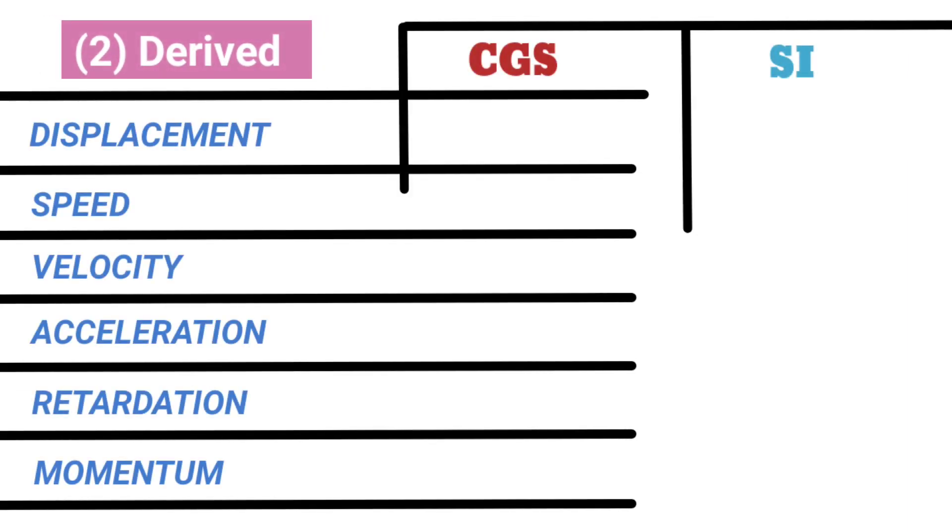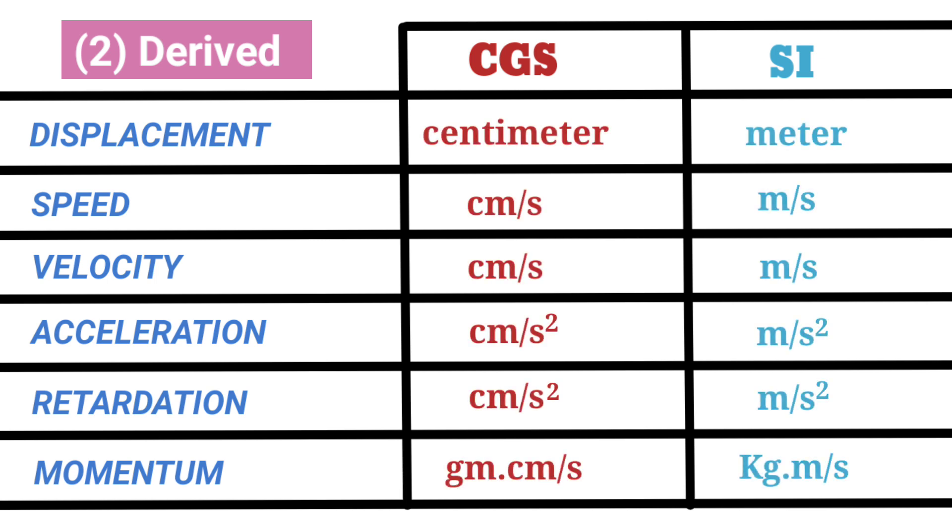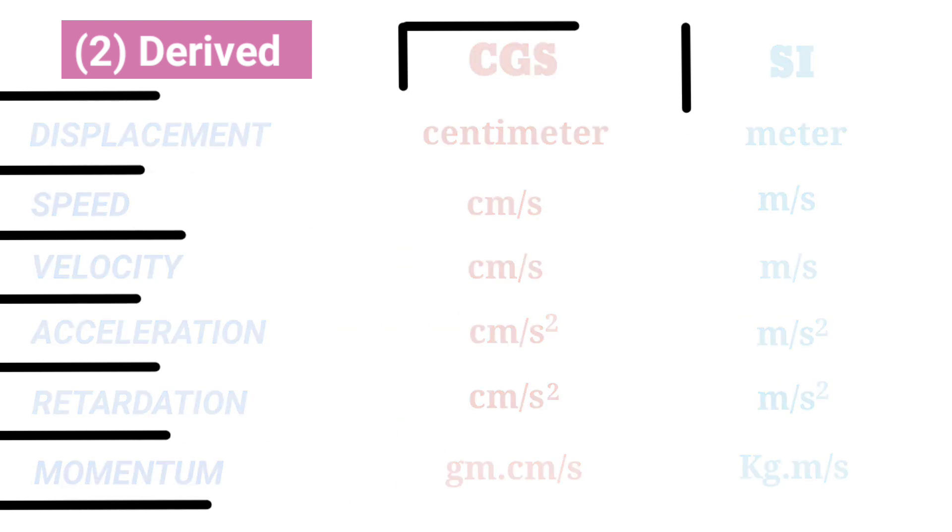Now for derived units. Displacement: CGS unit centimeter, SI unit meter. Speed: centimeter per second, meter per second. Velocity: centimeter per second, meter per second. Acceleration: centimeter per second square, meter per second square. Retardation: centimeter per second square, meter per second square. Momentum: gram centimeter per second and kg meter per second.